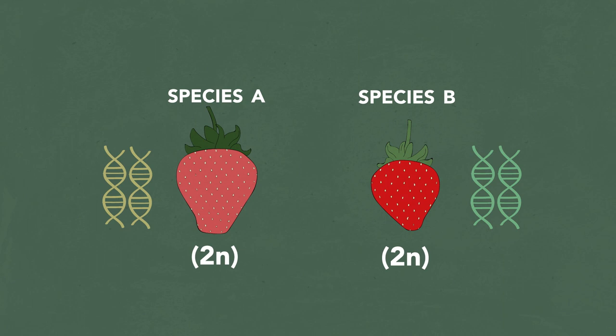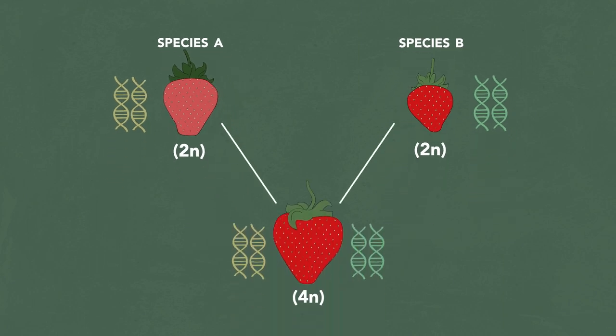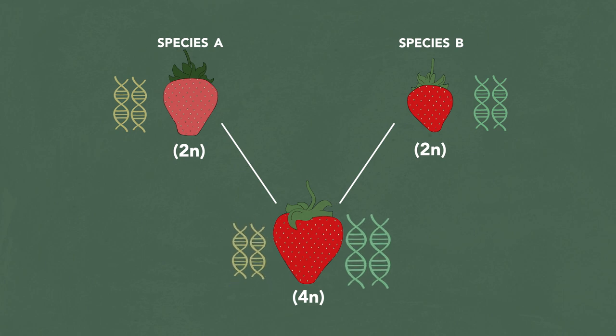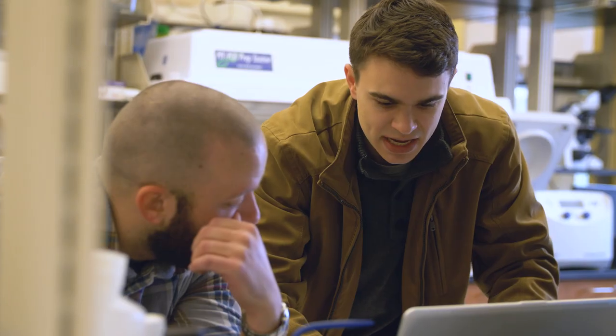If a polyploid event happens and that hybrid offspring is actually tetraploid — having four copies, two from A and two from B — you have two genomic sets within that single nucleus. The set derived from species A and the set derived from species B are referred to as subgenomes.